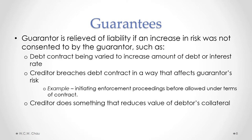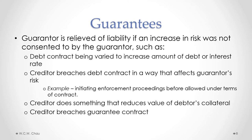Another situation is where the creditor does something that reduces the value of the debtor's collateral. For example, if the collateral was something perishable like pork bellies and when the creditor took possession of that collateral they did not put them into a refrigerator and they all went bad, the guarantor can say, you didn't take care of the collateral — I shouldn't be held liable for the loss of value of that collateral. Also, if the creditor breaches some term in the contract of guarantee itself, the guarantor can use that as the basis for being relieved of liability.